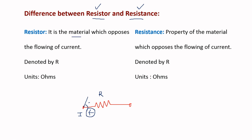A resistor is a material which opposes the flowing of current, while resistance is the property of that material which does the opposing. Both resistor and resistance are denoted by the letter R and both have units of ohms.